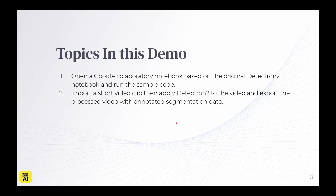The topics covered in this video: we will open a Google Collaboratory notebook based on the original Detectron 2 notebook and run the sample code. Then we're going to import a short video clip, apply Detectron 2 to the video, and export the processed video with the annotated segmentation data.